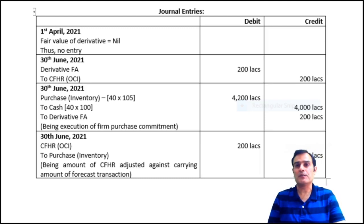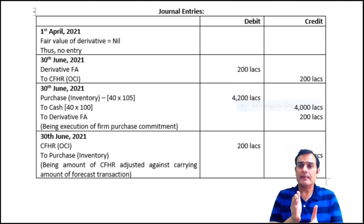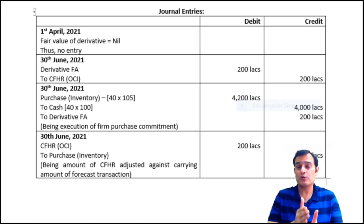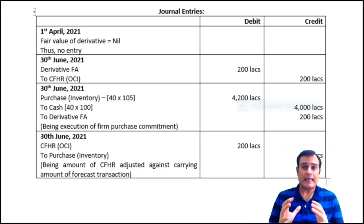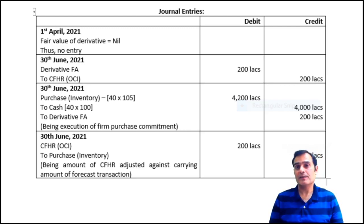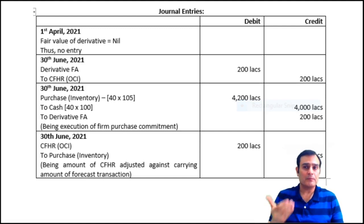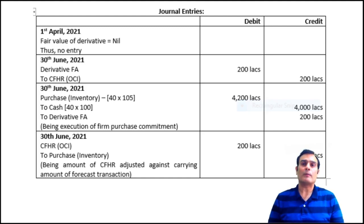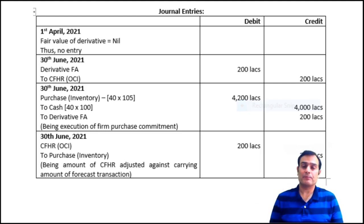Since there's a firm commitment, the cash flow hedge reserve is adjusted against the carrying amount of the unrecognized asset — inventory in this case. So the entry becomes: debit cash flow hedge reserve, credit inventory 200 lakhs. The net effect is that the inventory is recorded at 4,000 lakhs — equivalent to 100 rupees per pound — and the outflow is also fixed at that rate. With hedge accounting, the entire outflow is fixed at 100 rupees per pound and the inventory is also recorded at the same rate. The spot rate becomes indirectly irrelevant. The net figure works out to 4,000 lakhs.